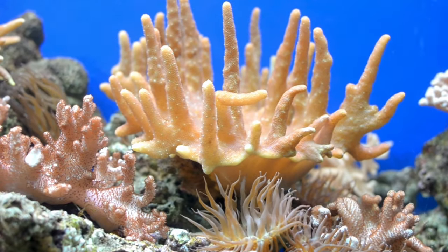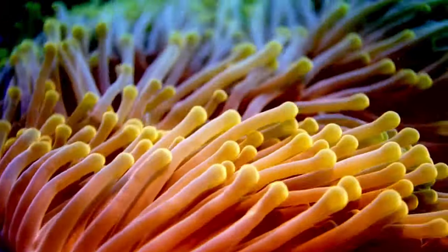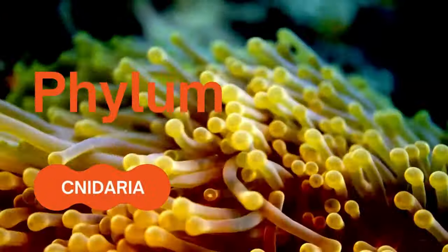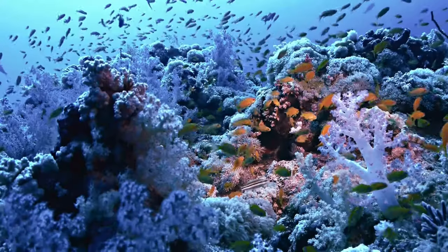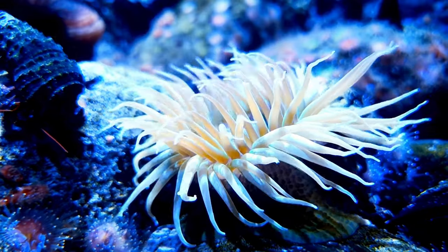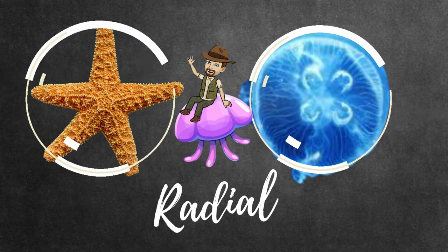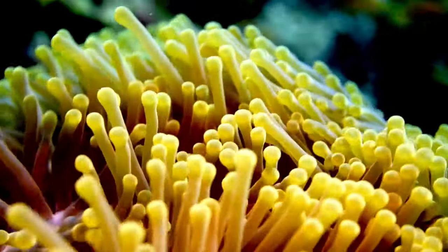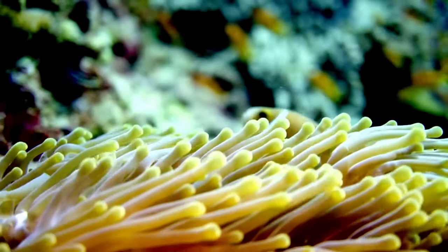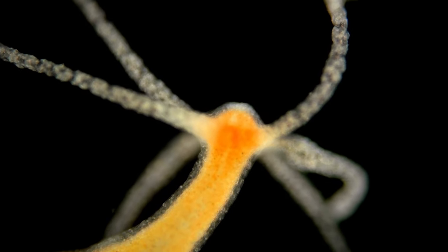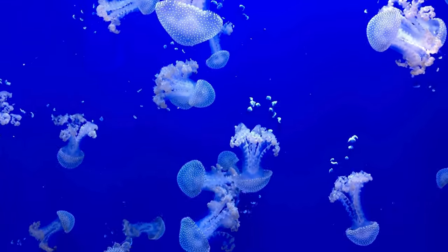As animals become more complex, we start to use the other characteristics mentioned before. Let's take a look at a phylum called Cnidaria — the jellyfish, corals, and the sea anemones. All Cnidarians exhibit radial symmetry and have tentacles around their mouth and stinging cells. In fact, Cnidaria comes from the Greek word 'nidos', which means stinging nettle. These cells are called nematocytes, which give the phylum its name.